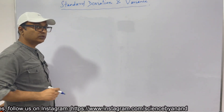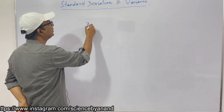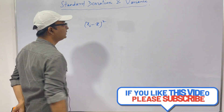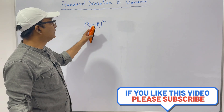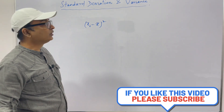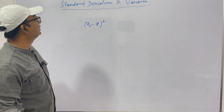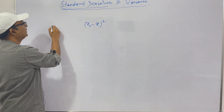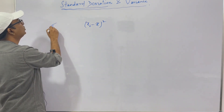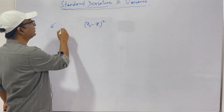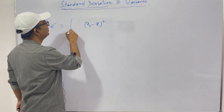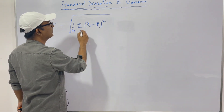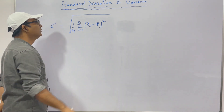Now to get over this problem we have another solution: if we take the square of the deviation, that is (xi minus x-bar)², then also the mean of deviation is going to be zero. So here we define a new term called standard deviation, denoted by sigma, defined as sigma = √(1/n · Σ(xi − x̄)²) for i = 1 to n.